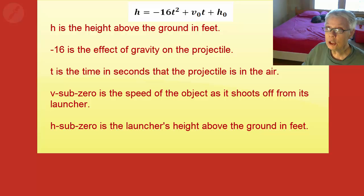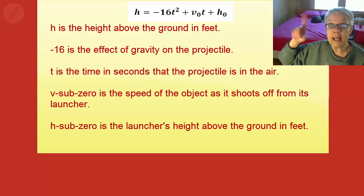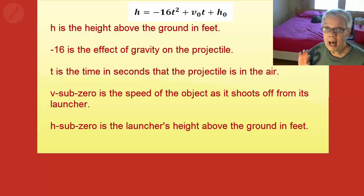The basic equation is h equals negative 16t squared plus v sub zero t plus h sub zero. h is the height above the ground, negative 16 is the effect of gravity on the projectile, t is the time in seconds that the projectile is in the air, v sub zero is the speed of the object as it shoots off from its launcher, and h sub zero is the height of the launcher above the ground. All the numbers in those positions have special meanings.